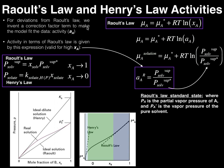Here is the Raoult's law expression: the chemical potential of the solution equals the chemical potential of the pure solvent plus RT times the natural log of the activity of that solvent. I'm leaving it as 'a' without breaking it into mole fraction and activity coefficient. We need to come up with an expression for this activity of the solvent, which we'll call the Raoult's law standard state.